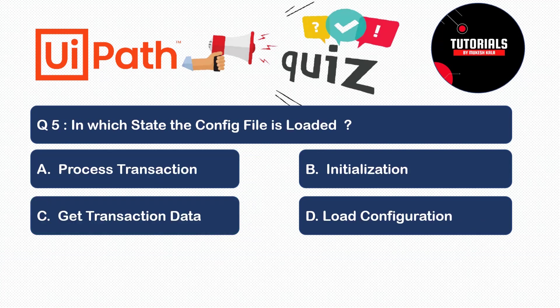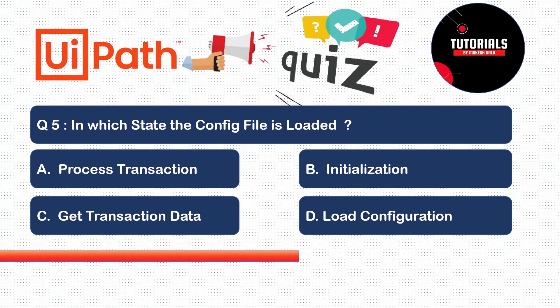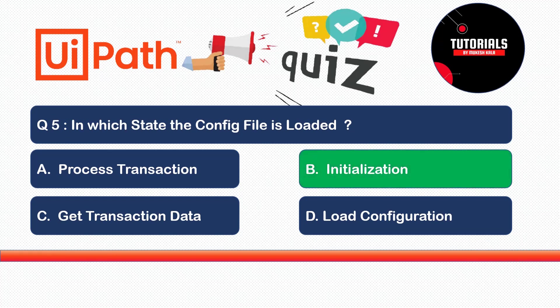Question five: In which state is the config file loaded? Options are: Process Transaction, Initialization, Get Transaction, or Load Configuration. The correct answer is the Initialization state, sometimes called the Init state. This is where you first read the config file and get the dictionary of string and object.